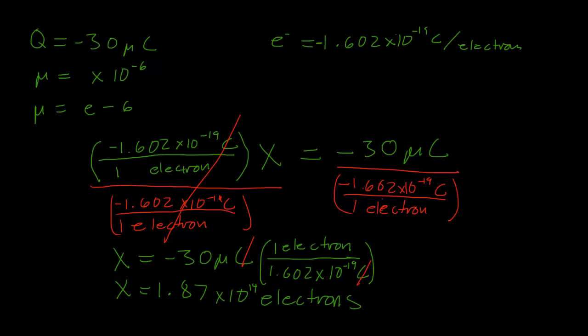So the point of this problem is to show you that a small charge Q of negative 30 microcoulombs, which is to the order of times 10 to the negative 6th. Even though this charge is small, it takes a large number, 187 trillion electrons, to make up that charge.